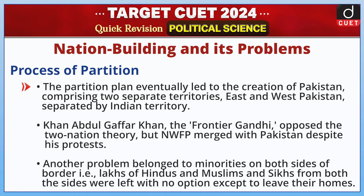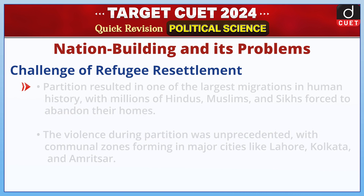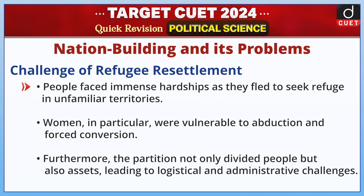Another problem was minorities on both sides of the border — lakhs of Hindus, Muslims, and Sikhs were left with no option except to leave their homes. Partition resulted in one of the largest migrations in human history, with millions forced to abandon their homes. The violence during partition was unprecedented, with communal tensions forming in major cities like Lahore, Kolkata, and Amritsar. People faced immense hardships as they fled to seek refuge in unfamiliar territories. Women in particular were vulnerable to abduction and forced conversion. Furthermore, the partition not only divided people, but also assets, leading to logistical and administrative challenges.